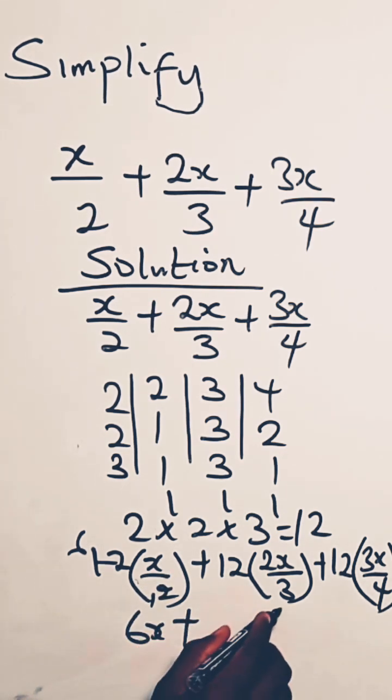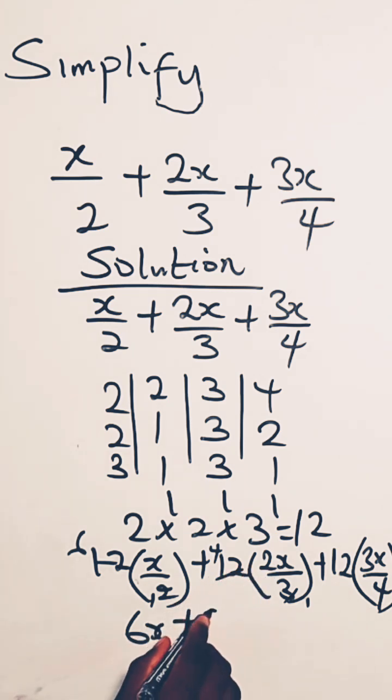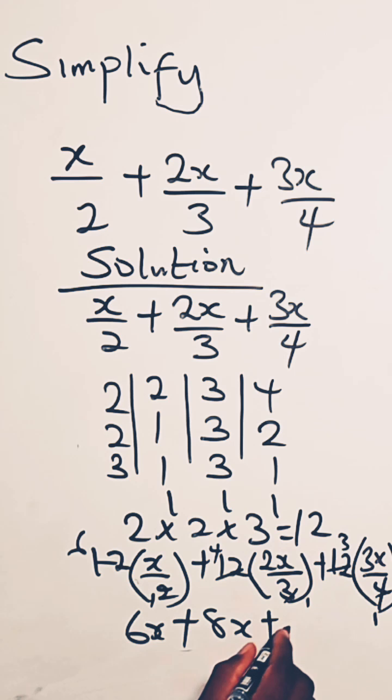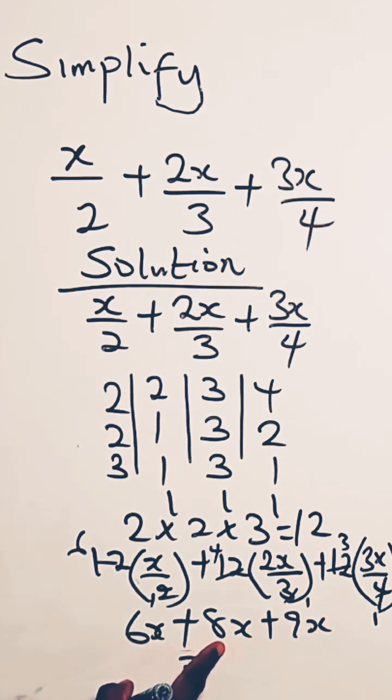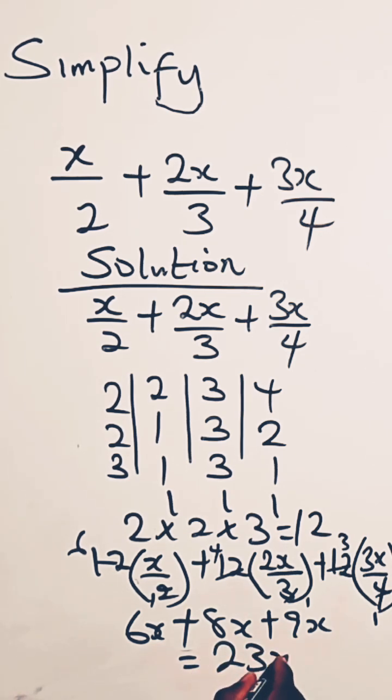Plus 3 here is 1, 3 in 12 is 4. 4 times 2x is 8x. Plus 4 here is 1, 4 in 12 is 3. 3 times 3x is 9x. So we add up: 6x plus 8x is 14x. 14x plus this, we have this to be 23x.